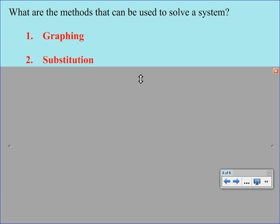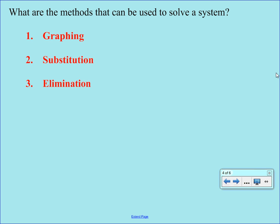Second is a method called substitution. And you can think about what the word substitution means. It would mean replacing. And then third is elimination. And elimination means we are actually eliminating something. Sometimes elimination can also be called linear combination. You may run across that if you're ever doing work with that. But either elimination or linear combination.